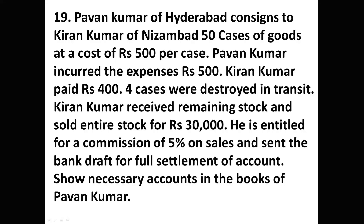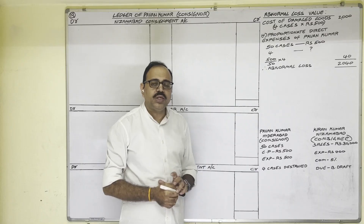Let us see the question first. Pavan Kumar of Hyderabad consigns to Kiran Kumar of Nizamabad 50 cases of goods at a cost of 500 rupees per case. Pavan Kumar incurred expenses of 500 rupees. Kiran Kumar paid 400 rupees. Four cases were destroyed in transit. Kiran Kumar received the remaining stock and sold the entire stock for 30,000 rupees. He is entitled to a commission of 5% on sales and sent a bank draft for full settlement of account. Show the necessary accounts in the books of Pavan Kumar.